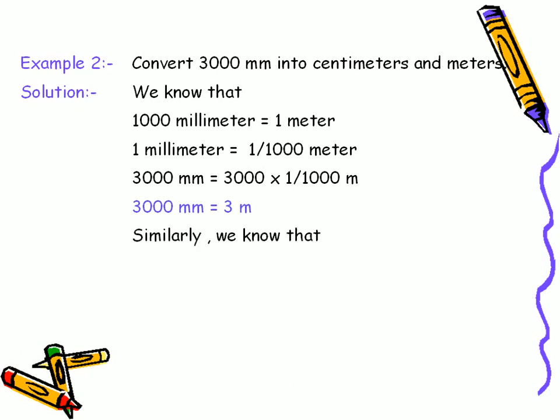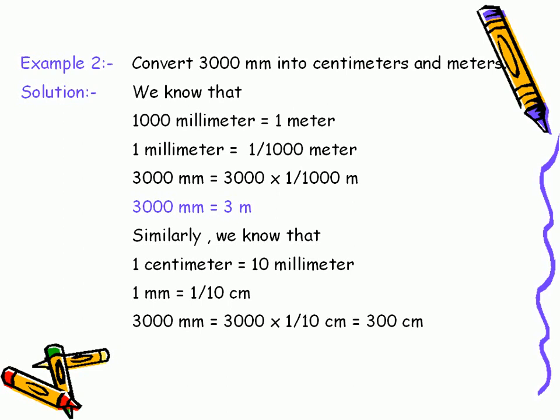In the same way, as we know that one centimeter is equal to ten millimeters, so one millimeter can be written as one by ten centimeters. Therefore, to convert three thousand millimeters to centimeters, we would multiply three thousand with one by ten, which would be equal to three hundred centimeters.